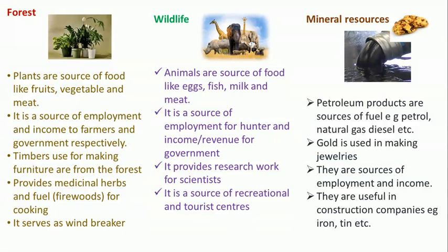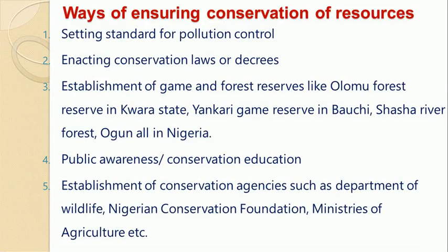The last resource to discuss is mineral resources. Petroleum products such as petrol, kerosene, and natural gas are used in propelling cars, generators, and machines. Gold is used in making jewelry such as necklaces, earrings, and bangles. Mineral resources are a source of employment and income for the government. They are also used in construction — resources such as iron, steel, tin, and aluminum are used in the construction industry.